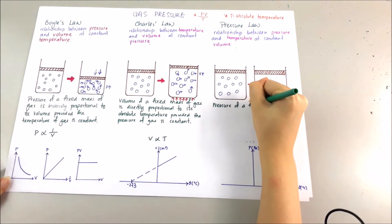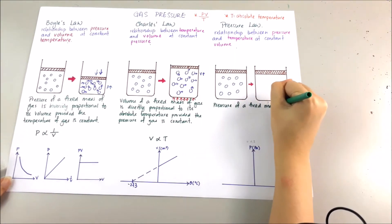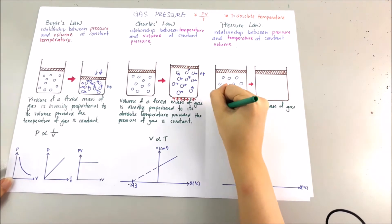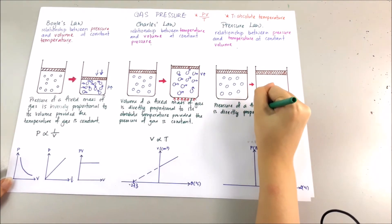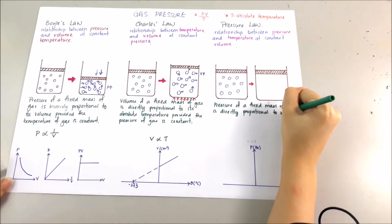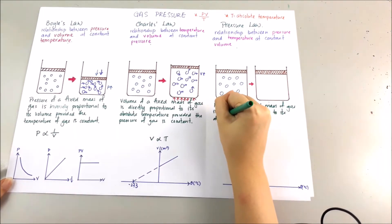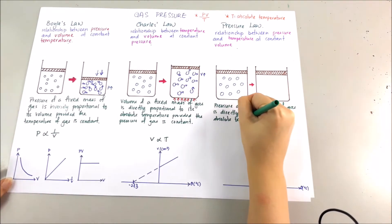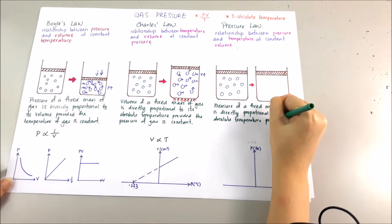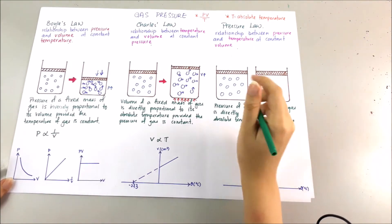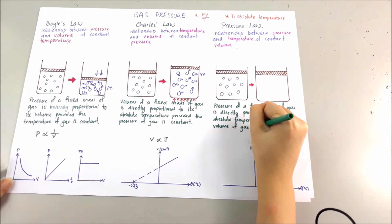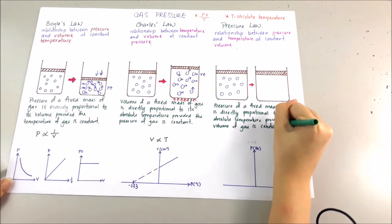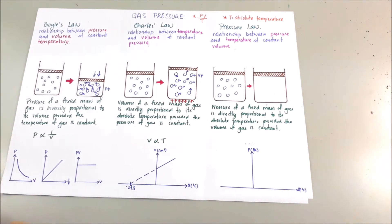The Pressure Law states that the pressure of a fixed mass of gas is directly proportional to its absolute temperature, with volume kept constant.